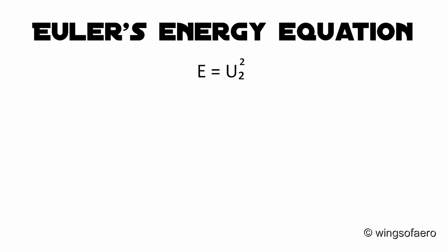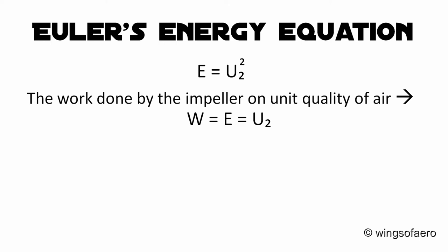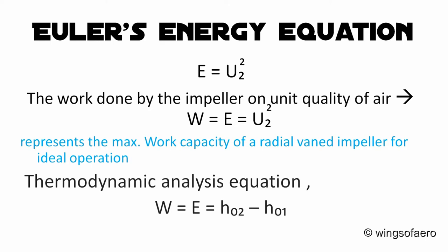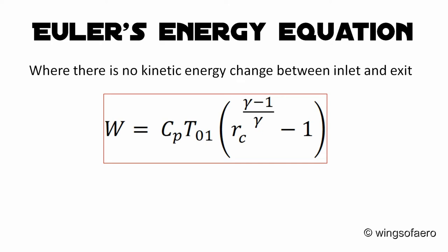This is the maximum energy transfer that is possible. Therefore, the work done by the impeller on a unit mass of air is given by W = E = U2². From thermodynamic analysis, applying the energy equation, W = E = H02 − H01. If Rc is the pressure ratio based on total pressure, we can rewrite the equation as W = Cp·T01·[(Rc^((γ−1)/γ)) − 1].